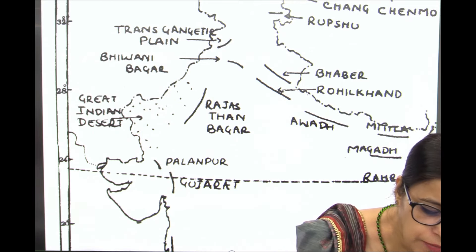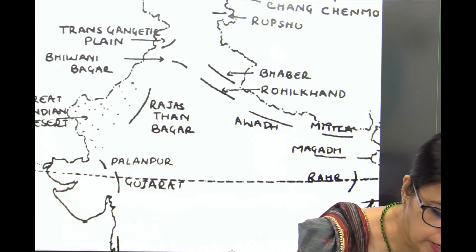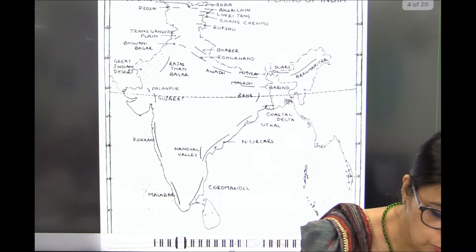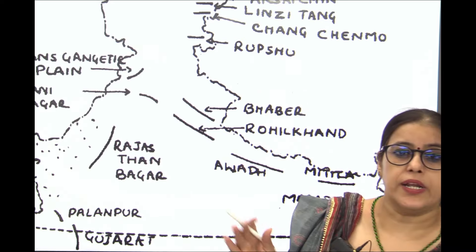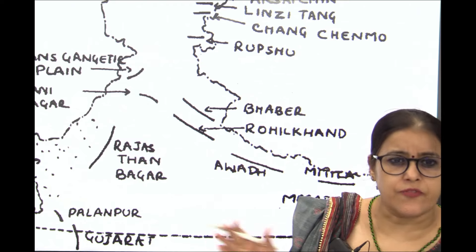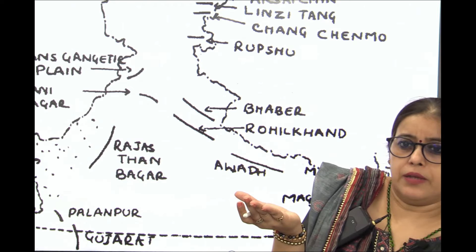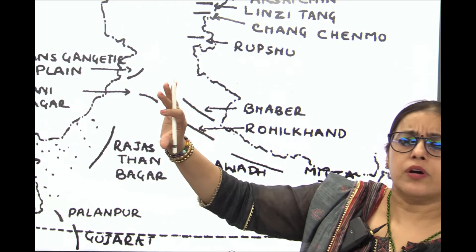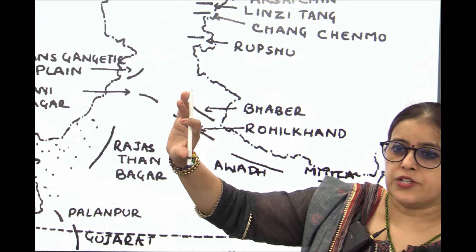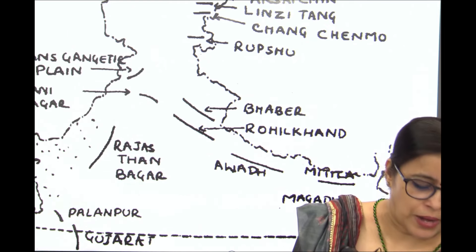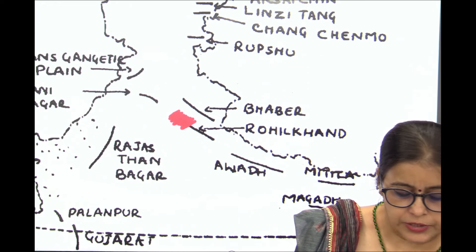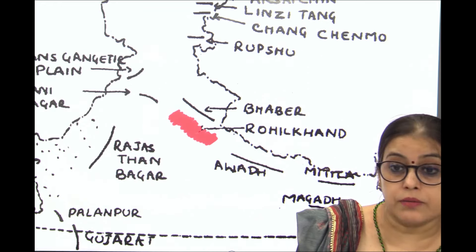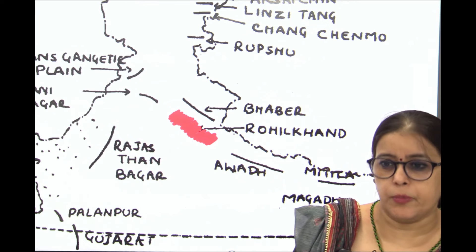For example, I have marked up Rohilkhand plain here. We know that Rohilkhand plain is the western, comparatively high-elevated, smaller part of the upper Gangetic plain. In place of marking the arc, I can mark it or shade it up to denote the extension of Rohilkhand plain.